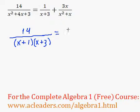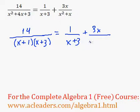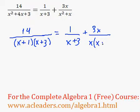Now that's just equal to 1 over x plus 3, plus 3x all over. We can also factor x squared plus x — we can factor out an x. x squared divided by x is x, and x divided by x is 1.